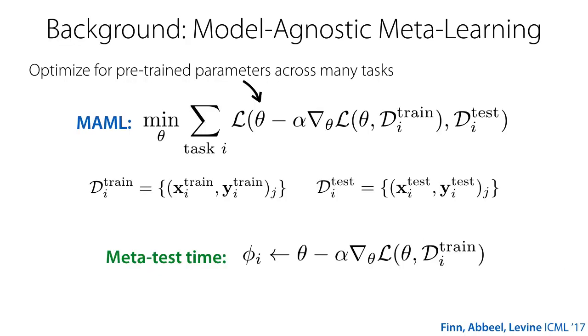To approach this problem, we extend the Model-Agnostic Meta-Learning algorithm, MAML, an effective approach for few-shot learning. MAML optimizes for a set of pre-trained parameters theta such that a few steps of gradient descent on a small data set leads to good generalization.